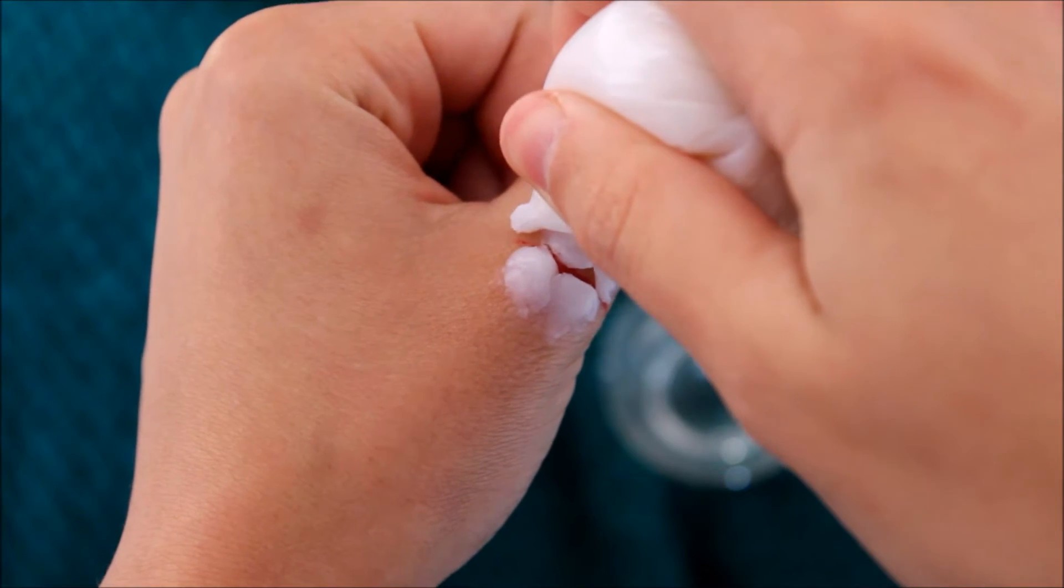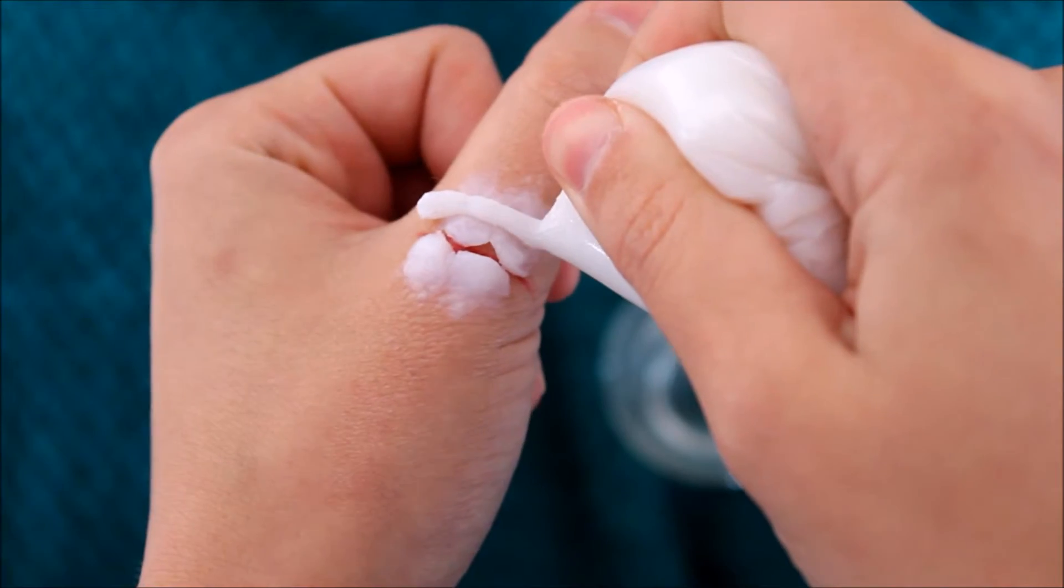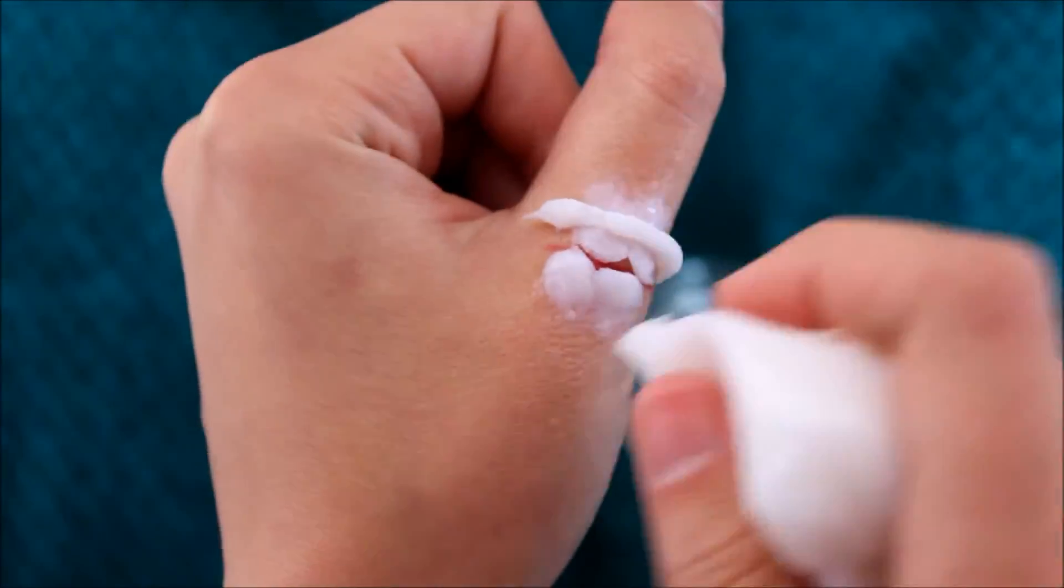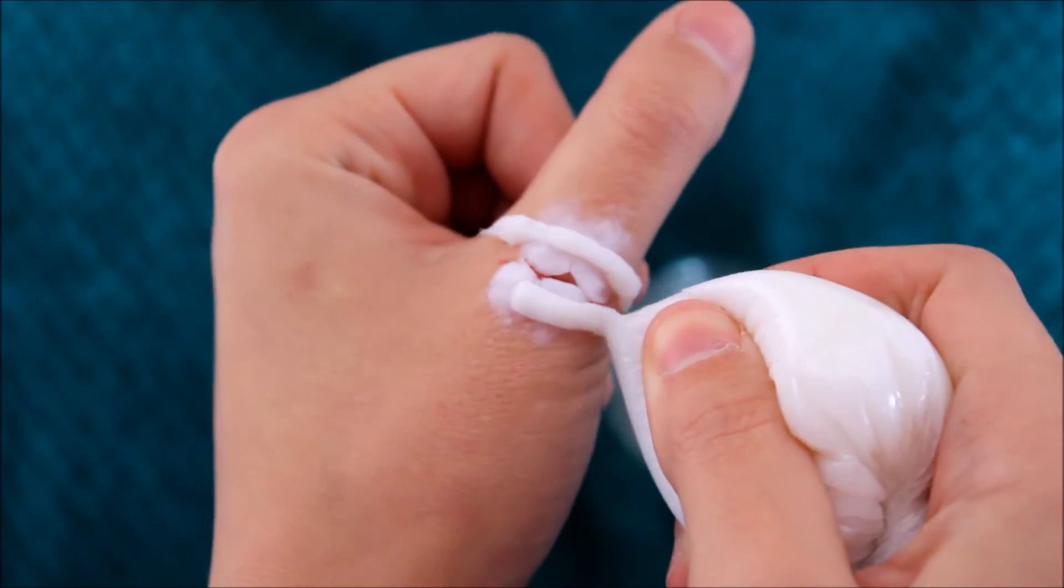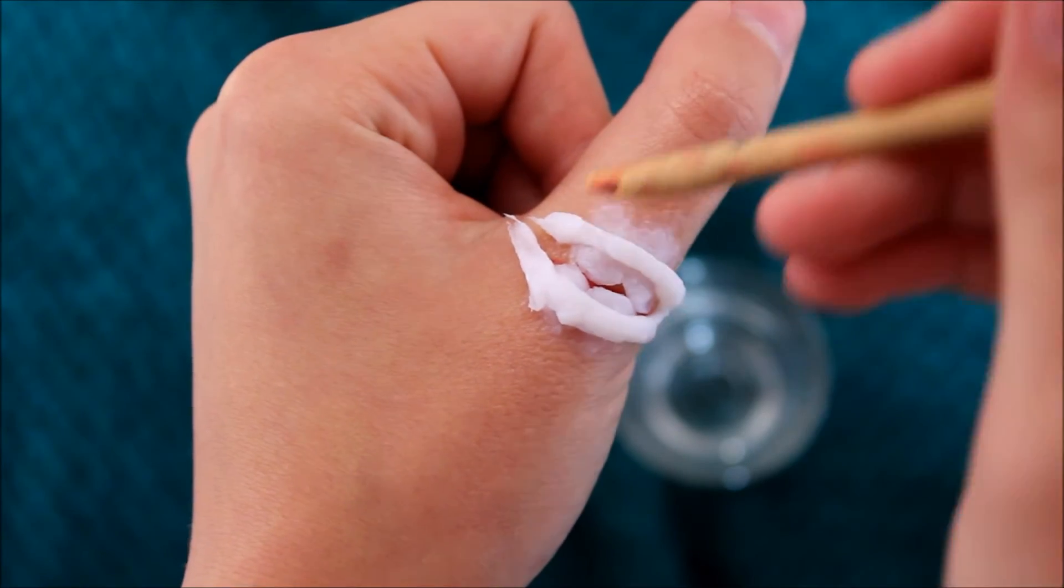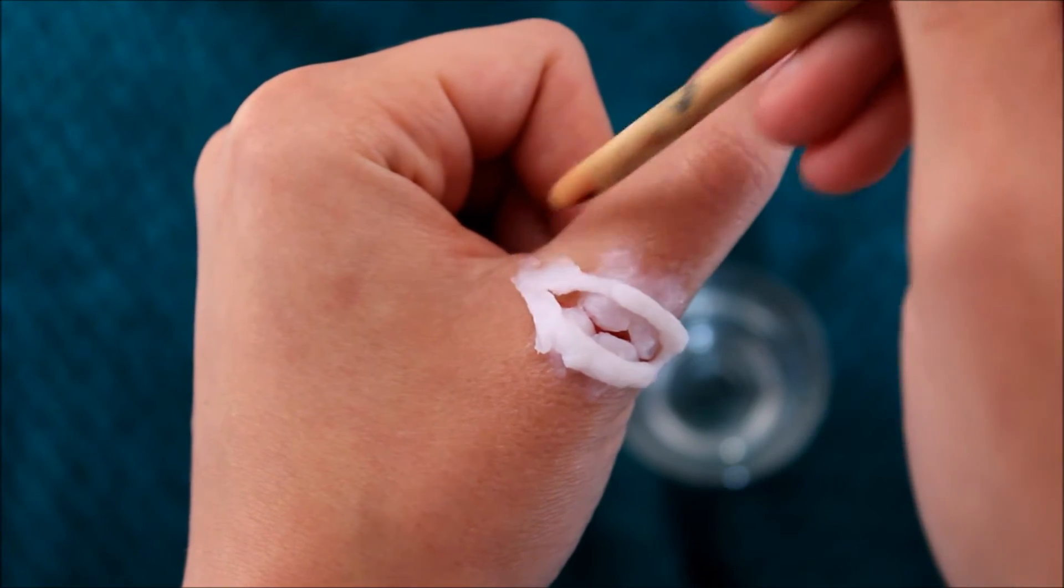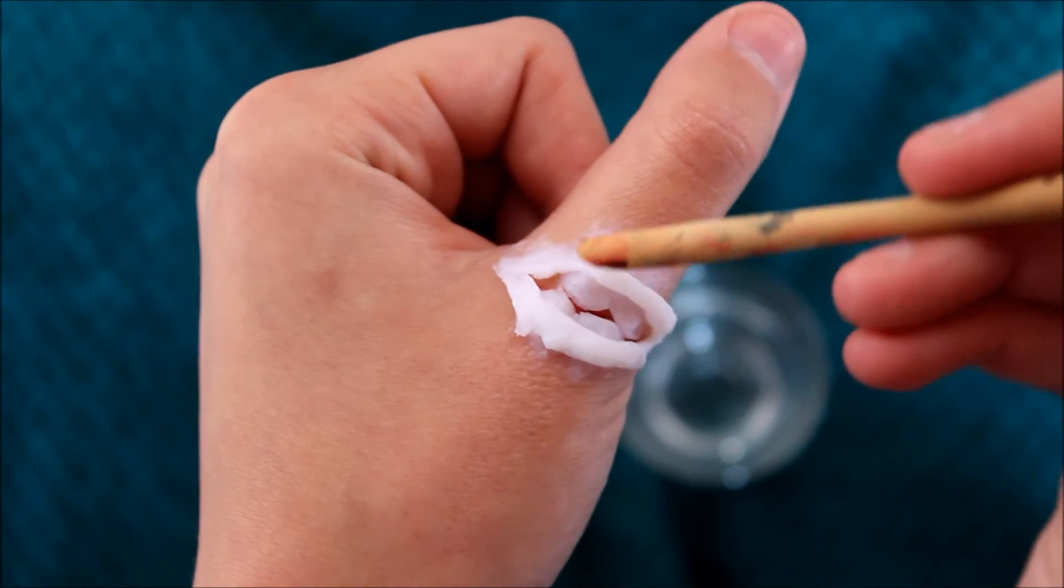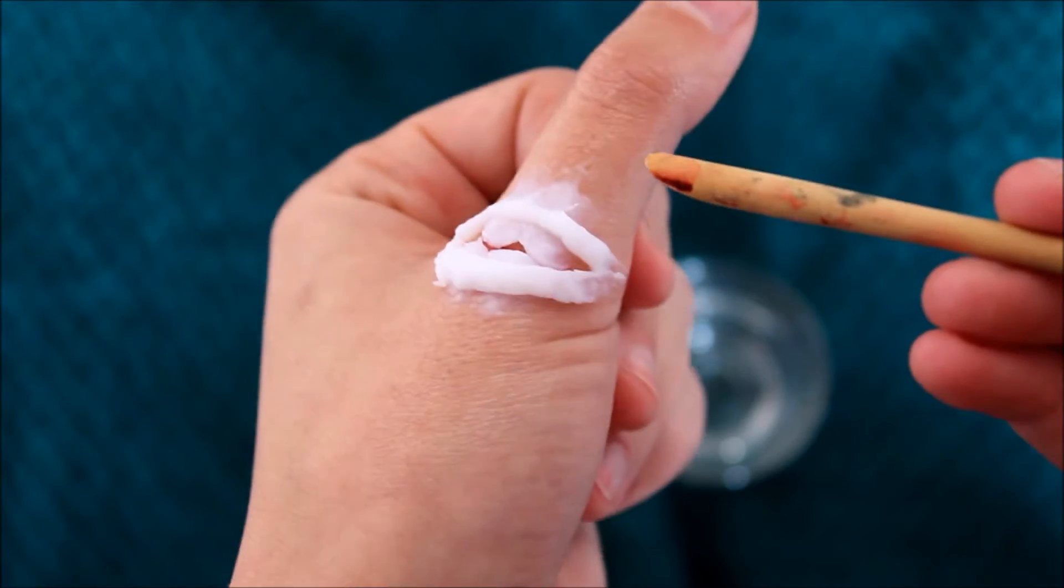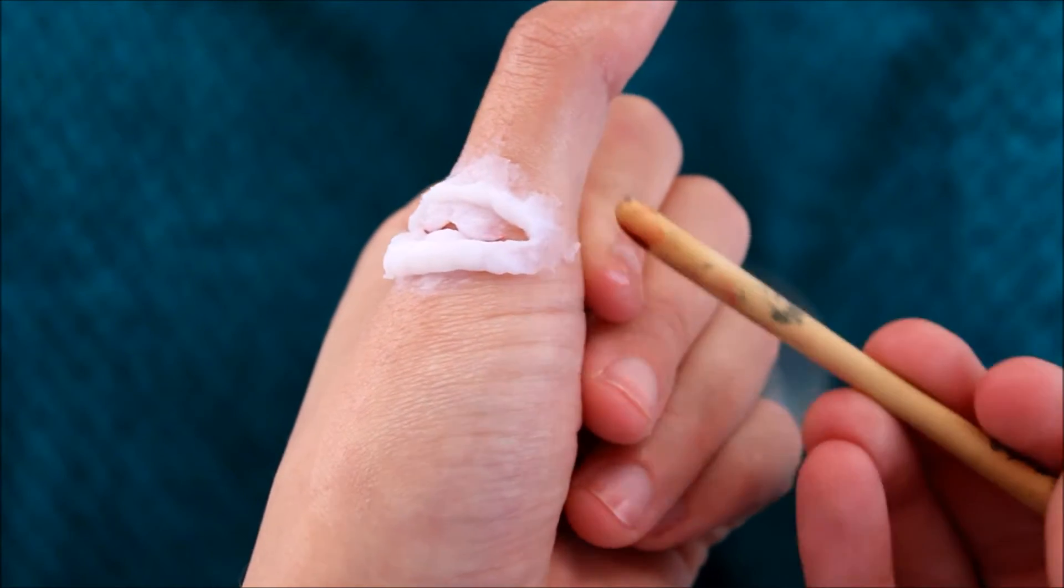So after you let that dry for a little bit, you just want to lay out your skin. So you start with where you want the leading edge, like the edge of the tear to be, and just pipe out a little line. And that's going to become your ripped skin. And then you just blend it down to your actual skin, which is probably the longest process. Sometimes I just give up partway through.